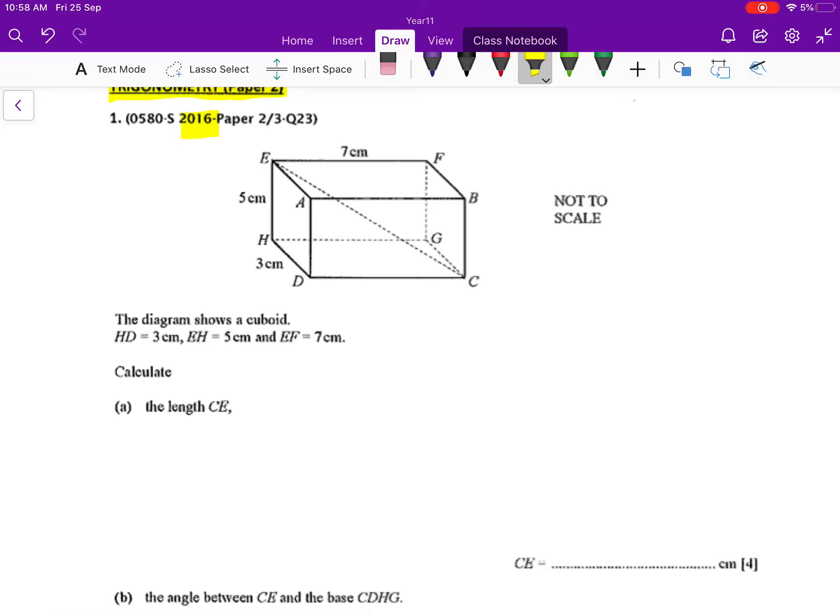This question says that the diagram shows a cuboid. HD is 3 cm, EH is 5 cm, and BF is 7 cm. They want you to calculate the length CE.